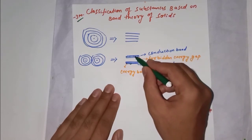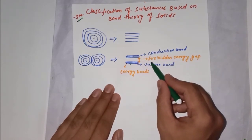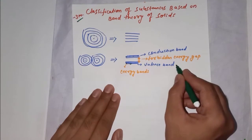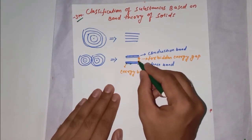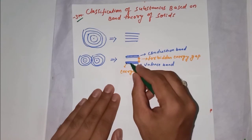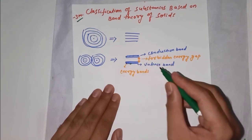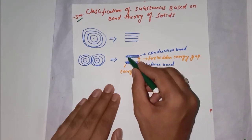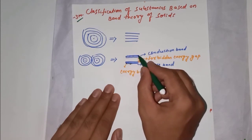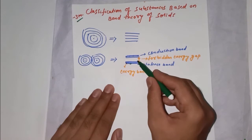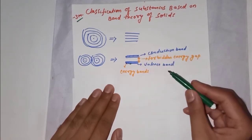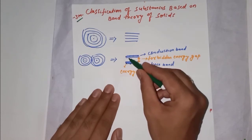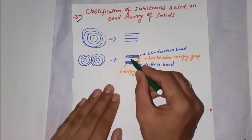The lower energy band is called the valence band and the upper energy band is called the conduction band. There is a gap between them called the forbidden energy gap. The valence band is the band in which valence electrons are available. Once an electron reaches the conduction band, it can freely move anywhere in the conductor. Electrons cannot exist in the forbidden energy gap.